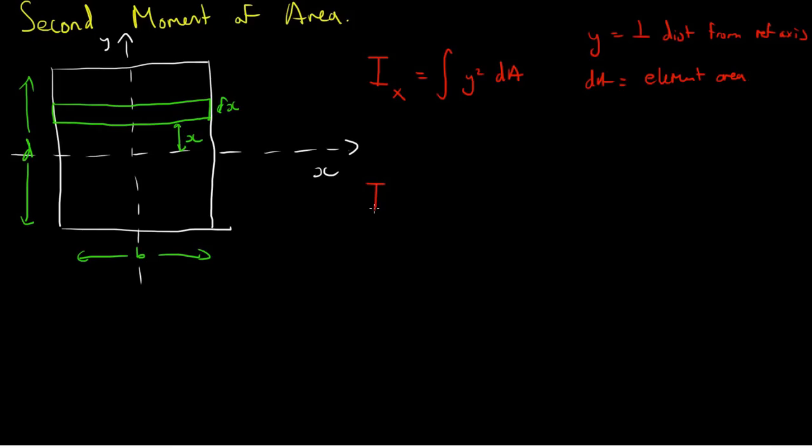So, if we say that I about x is equal to the integral, we want to go across the whole area. From the way I've drawn my strips you should be able to see that the limits we need to take are from minus d over 2, from here, all the way up to d over 2. So there are my limits.